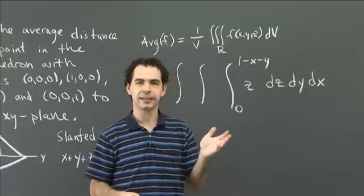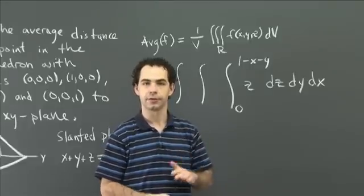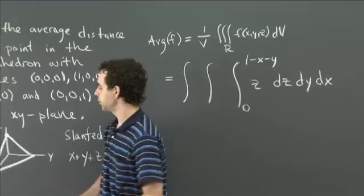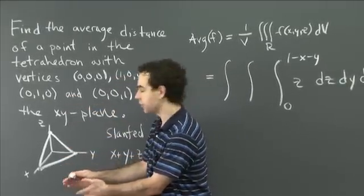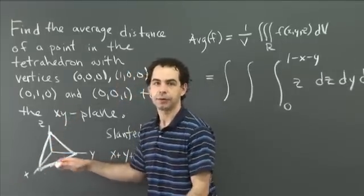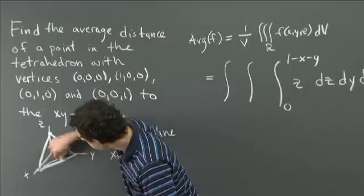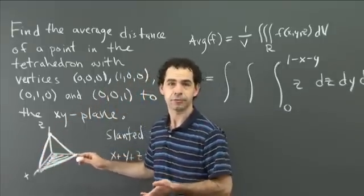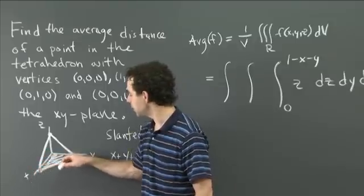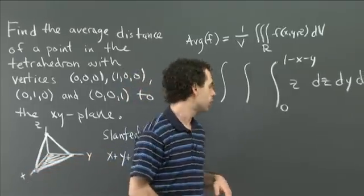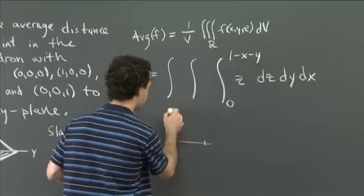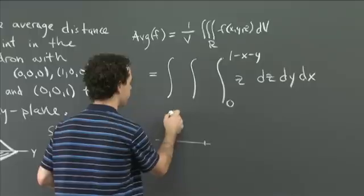Now we need to figure out the bounds on y in terms of x. What I like to do is draw a projection of your surface — you're in a two-dimensional world and can look at that image more easily. We look at this tetrahedron and imagine projecting it down into the xy plane. That gives us the bottom face of the tetrahedron. That region has vertices (0,0), (1,0), and (0,1) — it's this triangle.